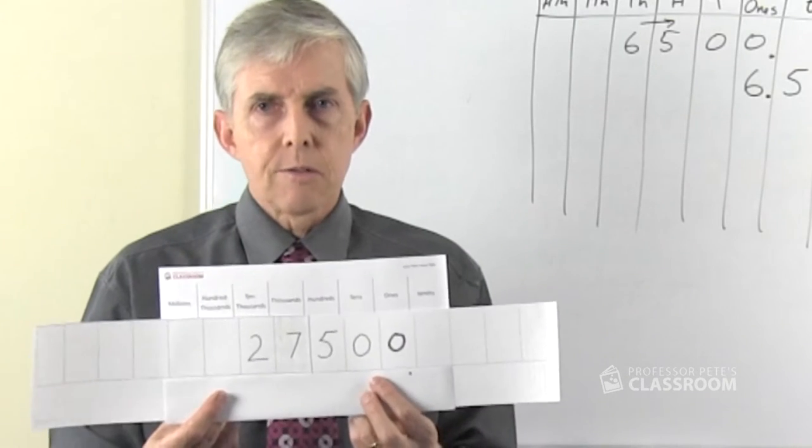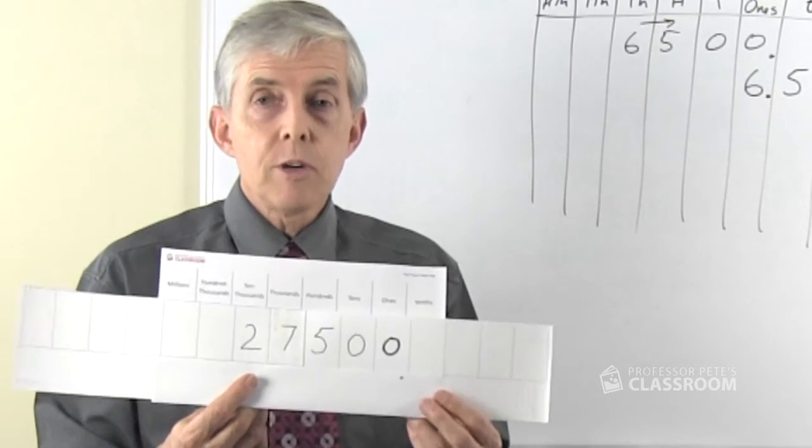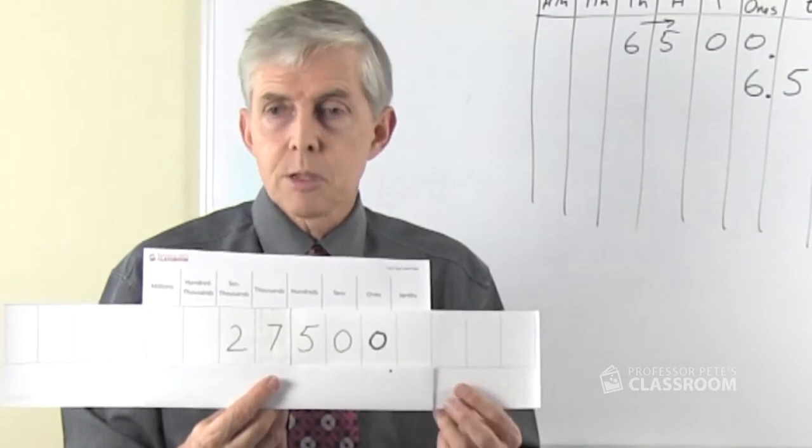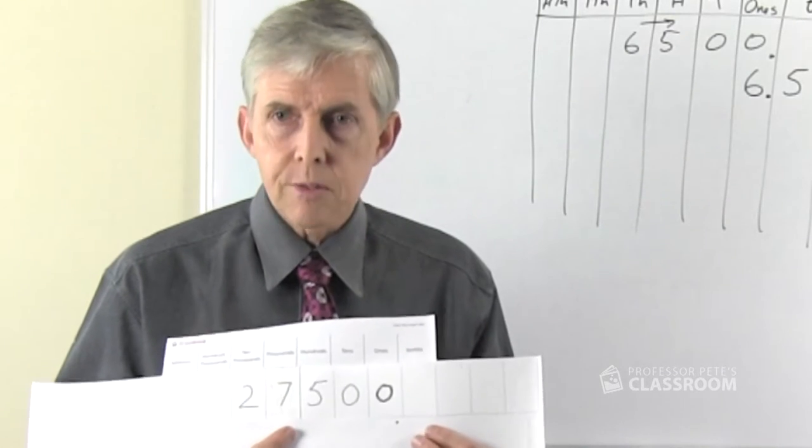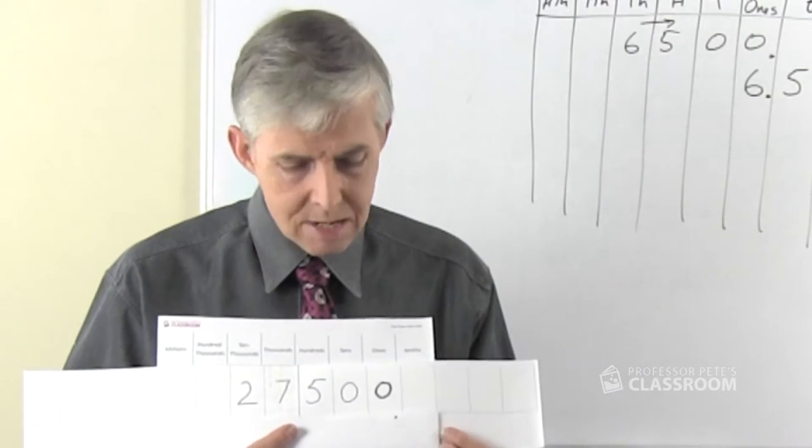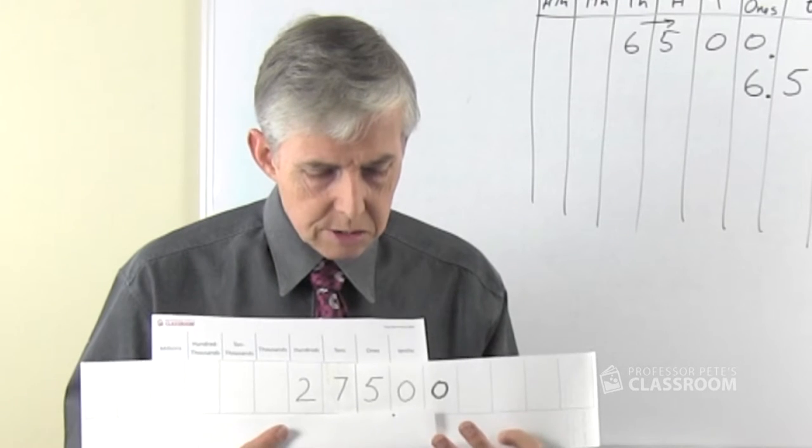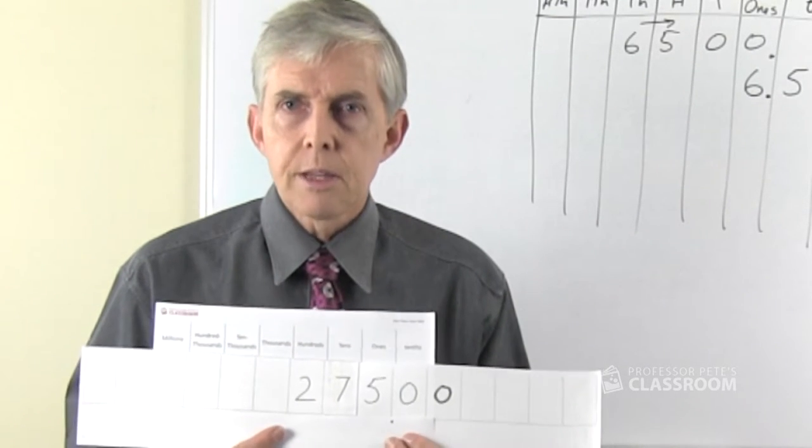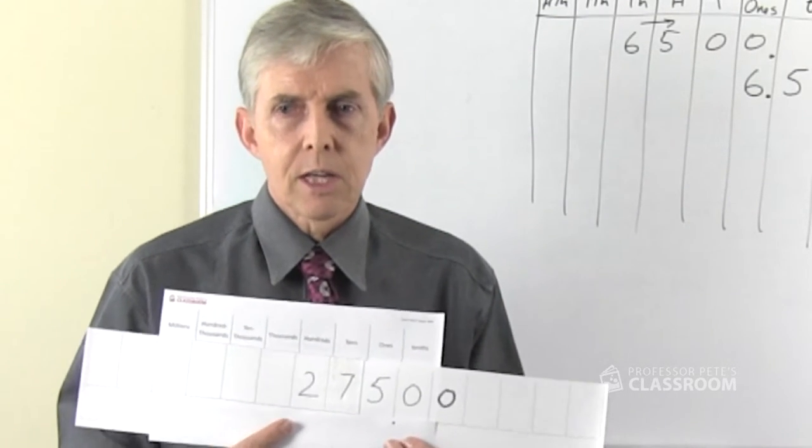We could reuse this of course for lots of other numbers. We can say let's take the 27,500 and divide it by a hundred, so we move everything two places to the right because it's getting smaller, there's around 275 and so on.